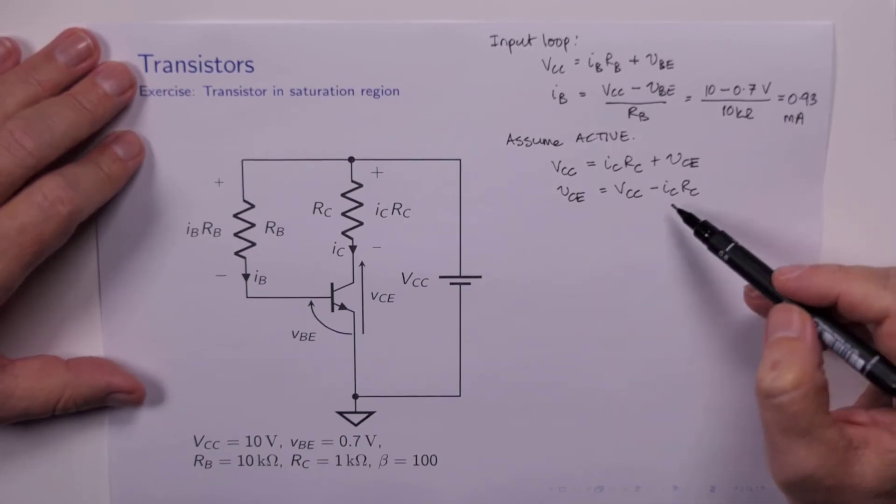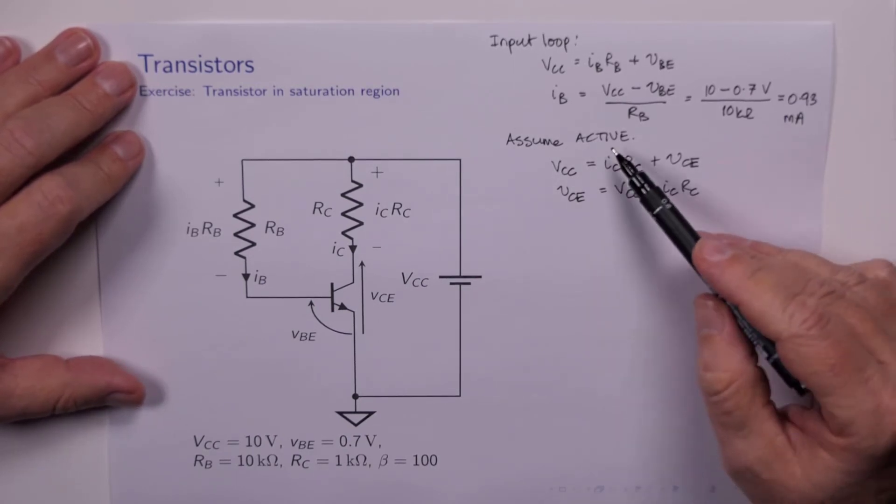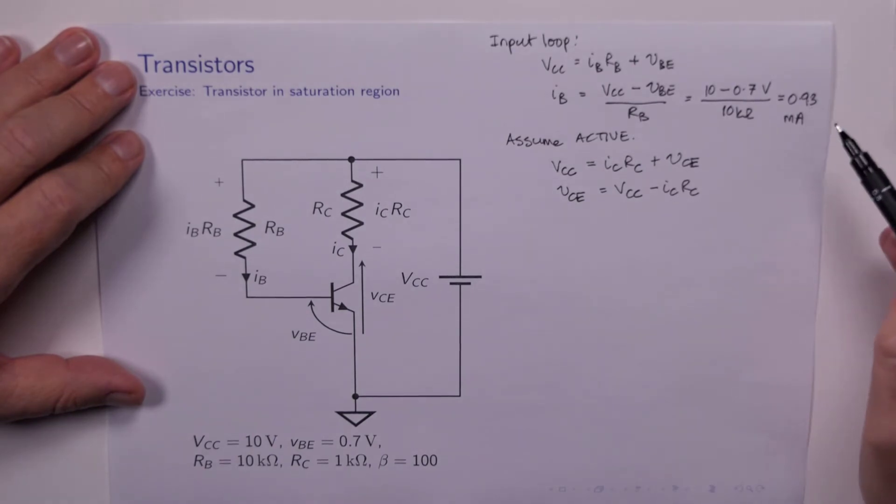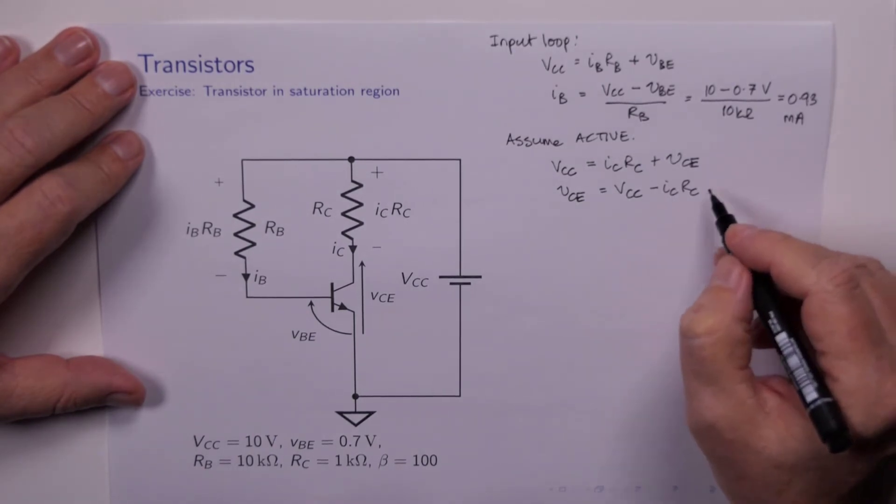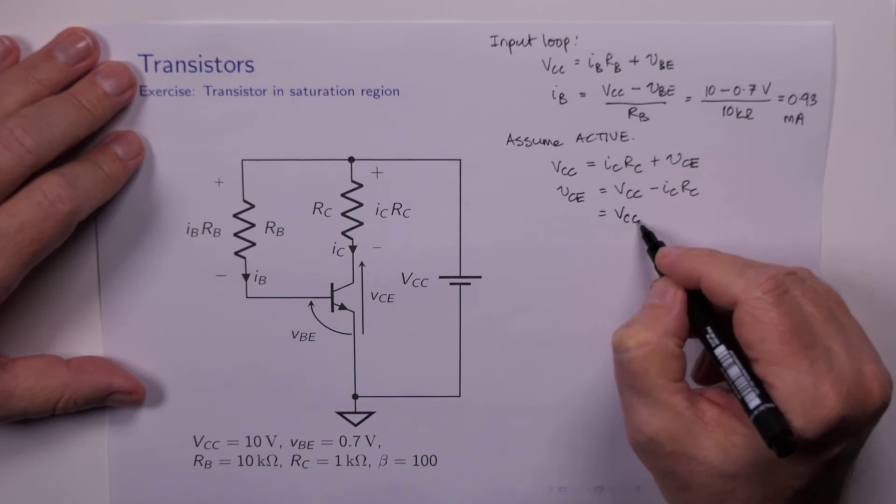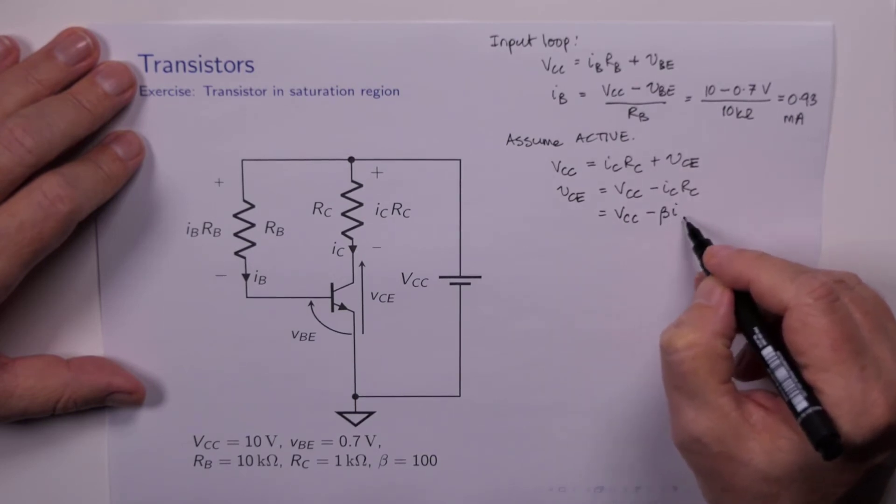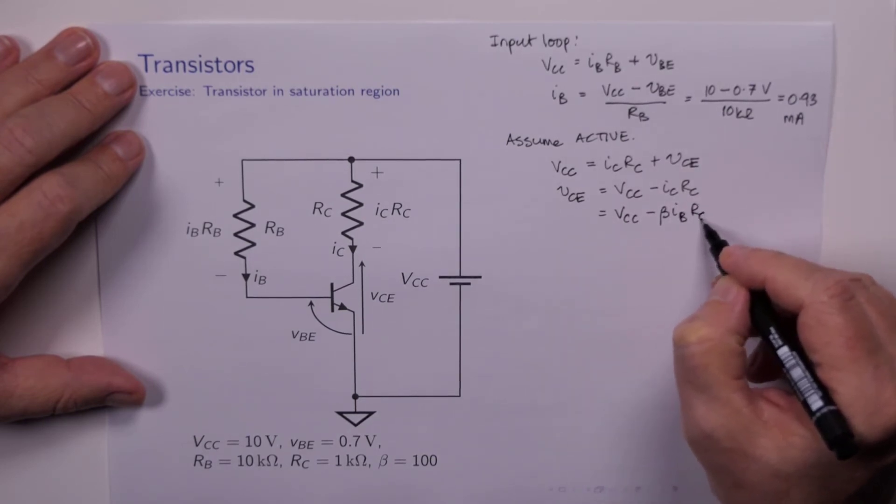So VCE is equal to VCC minus IC RC. What's IC? Well, if we're in the active region it's going to be beta times 0.93.